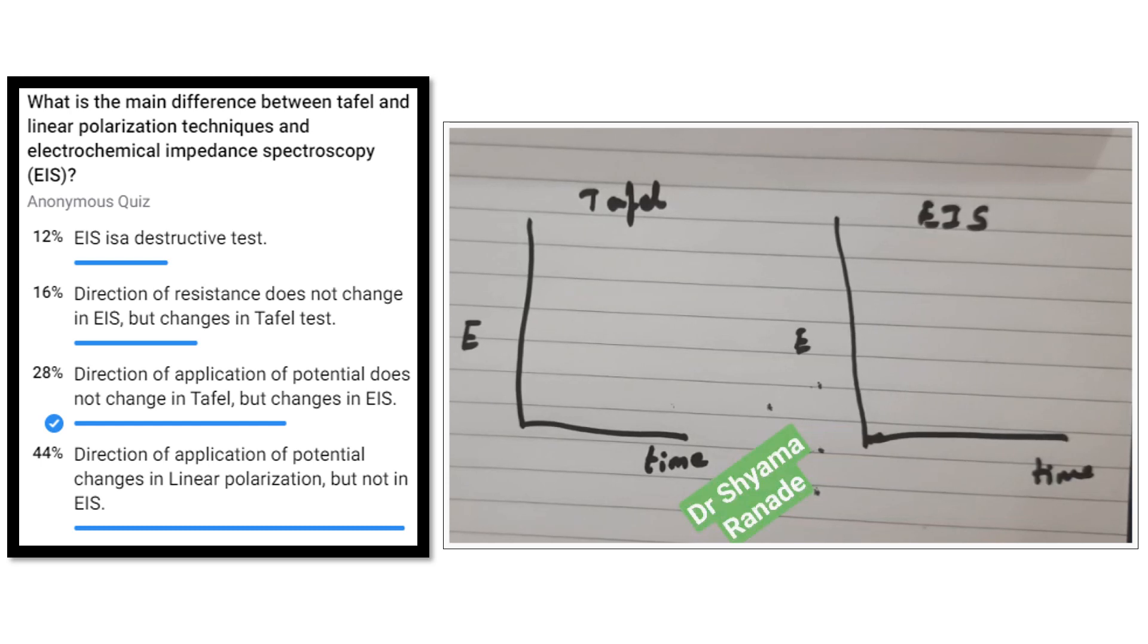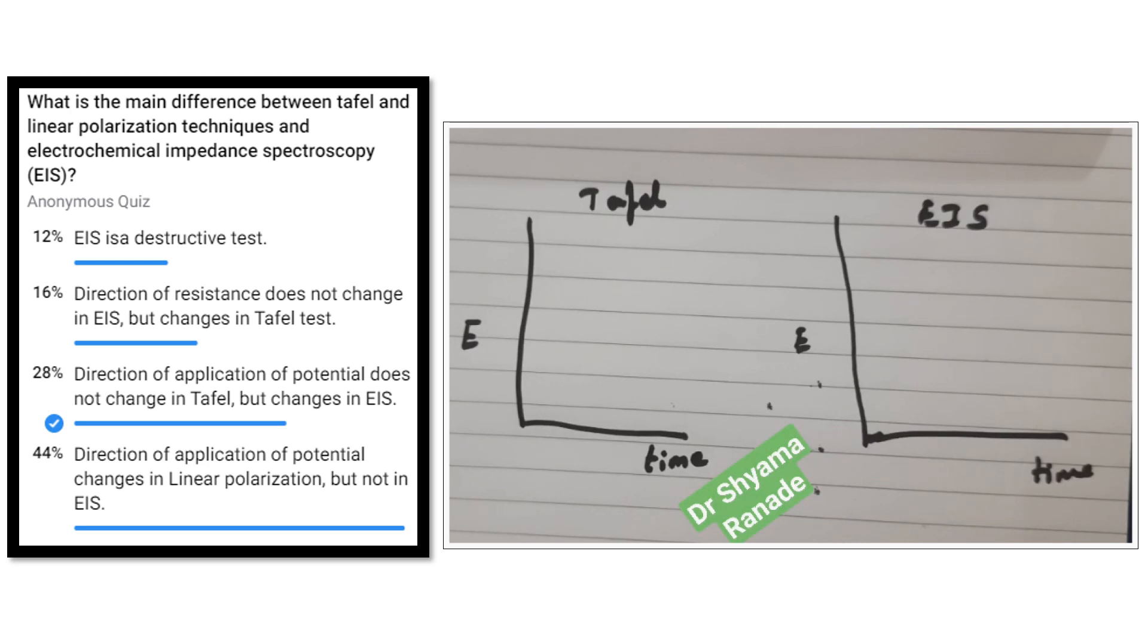The last question was what is the major difference between the polarization techniques of Tafel and linear polarization and electrochemical impedance spectroscopy.